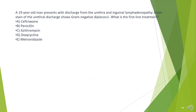A 19-year-old man presents with discharge from the urethra and inguinal lymphadenopathy. Gram stain of the urethral discharge shows gram-negative diplococci. What is the first-line treatment?